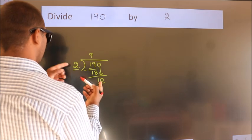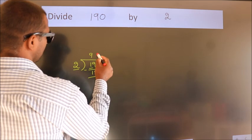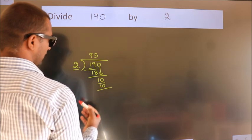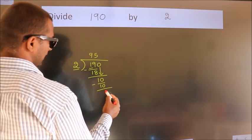When do we get 10? In the 2 table, 2 times 5 equals 10. Now we subtract. We get 0.